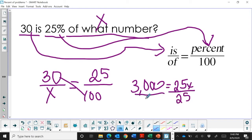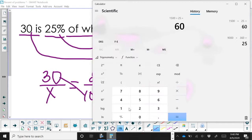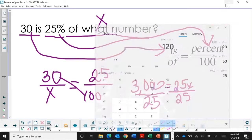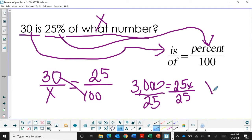Divide 3,000 by 25. So take your calculator and take 3,000 and divide it by 25. You get 120. So x is equal to 120.